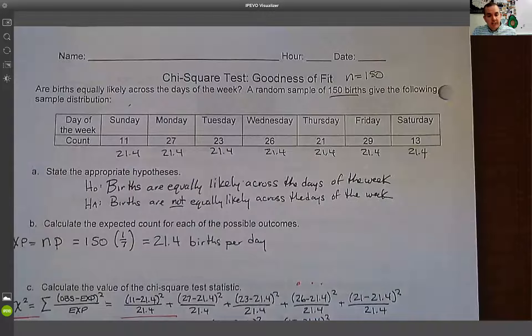What we're going to be doing next is we're going to be moving into two-way tables. Two-way tables will have two different categorical variables. And we're going to do a chi-square test of homogeneity, sameness, and a chi-square test of independence or association make difference.